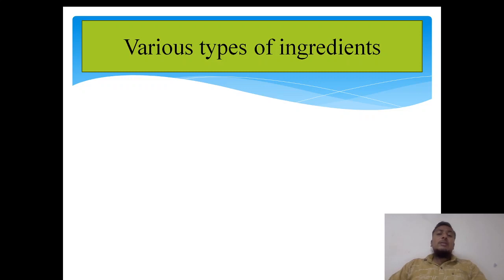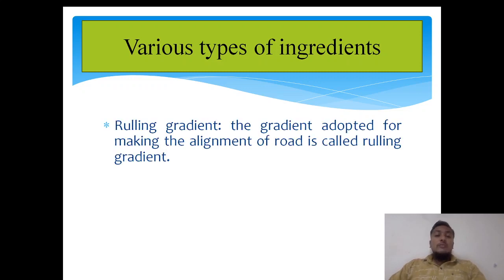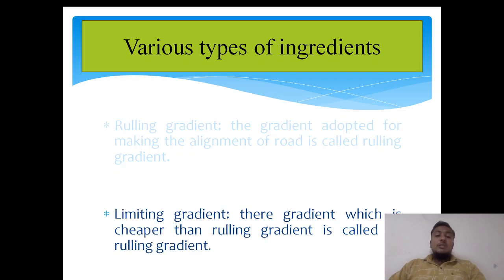Let us move towards the various types of gradient. The first one is ruling gradient — the gradient adopted for making the alignment of a road is called ruling gradient. Simply put, the alignment of a road which is made by adopting a gradient is called ruling gradient. The next one is limiting gradient — the gradient which is steeper than ruling gradient is called limiting gradient.